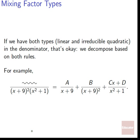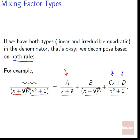If we have both types — a linear and an irreducible quadratic — mixed together in the denominator, that's fine. We just decompose based on both rules. For example, if we have (x+9)² times (x²+1), we get A over (x+9) + B over (x+9)² for the linear part, and then (Cx+D) over (x²+1) for the irreducible quadratic part. Linear factors on the bottom give constants on top; quadratic factors on the bottom give linear factors on top.